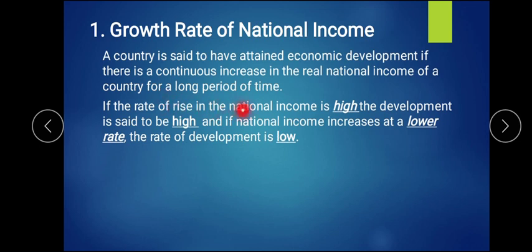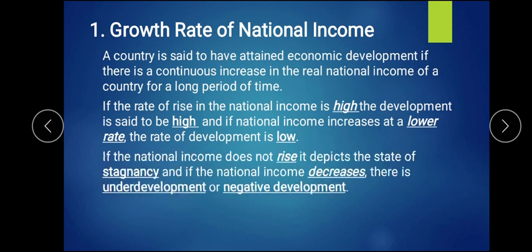To identify the level of development: if the rate of national income is high — near 8 to 10 percent every year — that is a high growth rate and shows high development. If income increases at a low rate, for example 2 to 4 percent, development is there but very low. If it does not rise or fall, it is called a state of stagnancy — it is at a constant state.